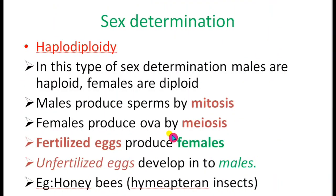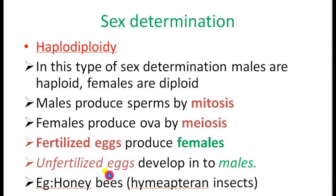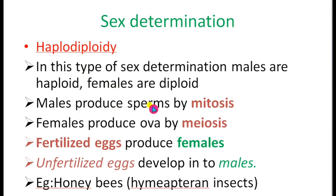Welcome to one more class on sex determination. In this class we are going to learn about haplodiploidy. This is another theory to explain sex determination, especially in insects — particularly in honeybees. In this type of sex determination, males are haploid and females are diploid, which is why it is called haplodiploidy.